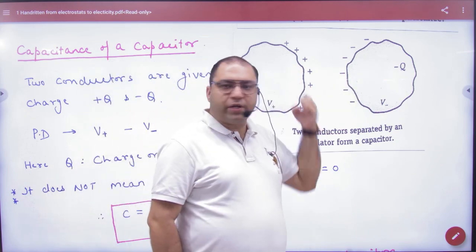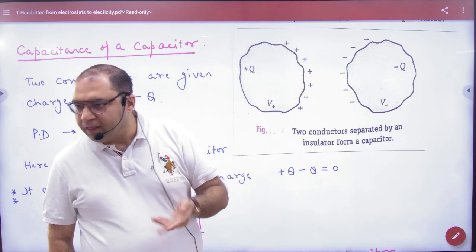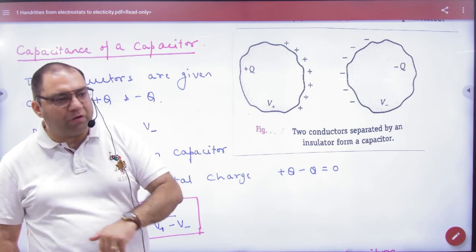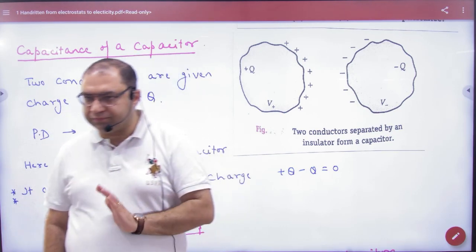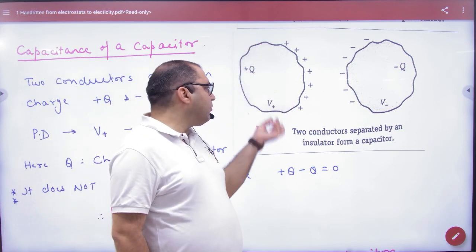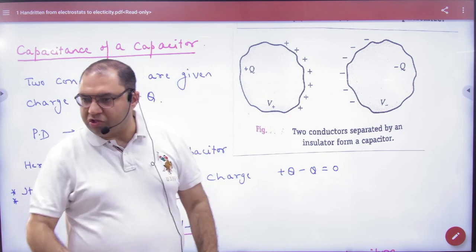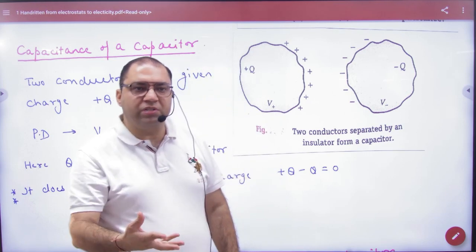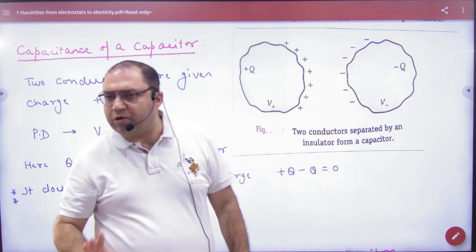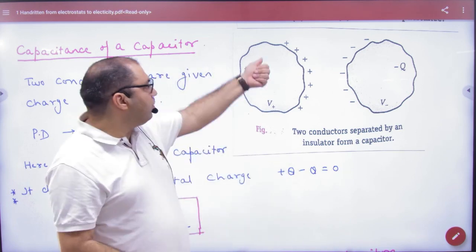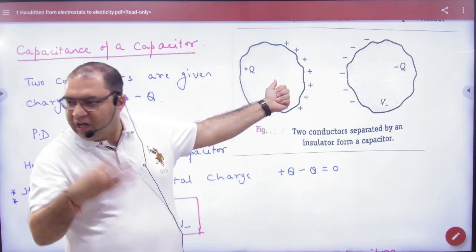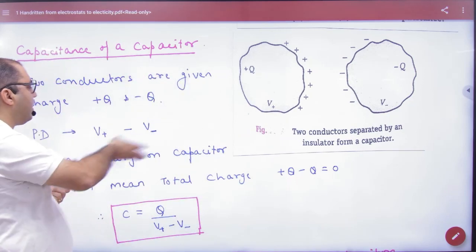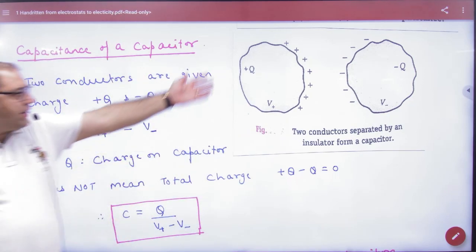So this plus Q attracts minus Q by induction. A positive charge produces a positive potential on a body, and a negative charge produces a negative potential. So positive charge produces V plus (positive potential) and negative charge produces V minus. The charge given to the first body is plus Q, and the induced charge on the other plate is minus Q. So the capacitor stores plus Q charge.